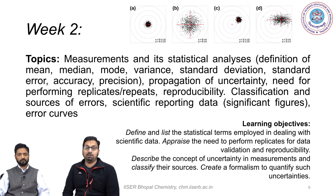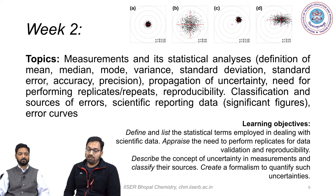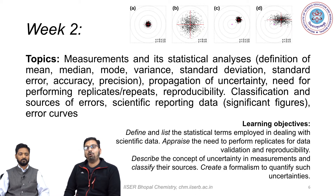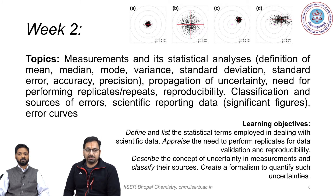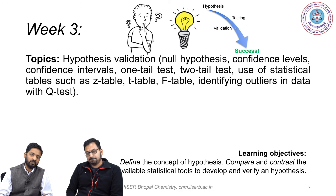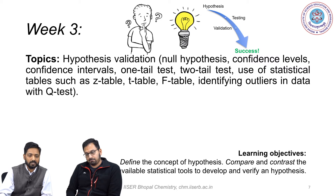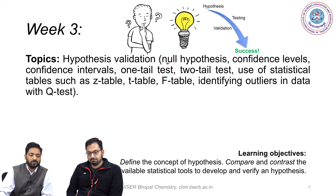In week two, we will take a philosophical view on what is data, how measurements come about, and what is the statistical way of analyzing data — in terms of mean, median, mode, variance, and standard deviation. We will also understand how uncertainty propagates when you have multiple variables that are measured, the need for repeating experiments, and the classification of how errors come about. How to report scientific data will be discussed in detail, laying a nice foundation for statistical analysis with regards to hypothesis validation.